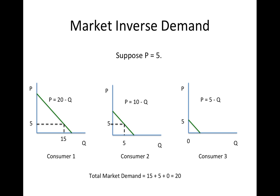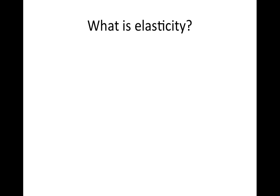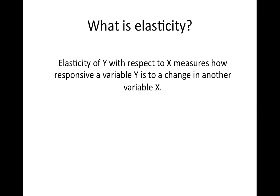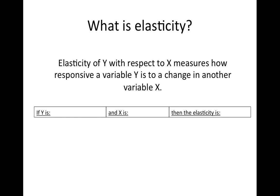Now that we've found the market demand for a good, we can start to describe characteristics of the market demand. One characteristic is how responsive consumers are to changes in a good's price. We call this responsiveness elasticity. In general, the elasticity of Y with respect to X measures how responsive a variable Y is to a change in another variable X. Elasticity is a unitless way to measure how one variable responds to changes in another variable. In principle, we can measure the elasticity of anything with respect to anything. But for demand, there are three common elasticities that we calculate.